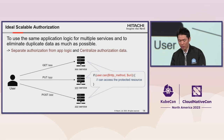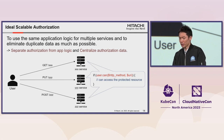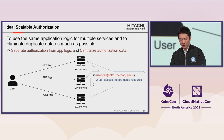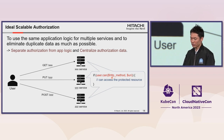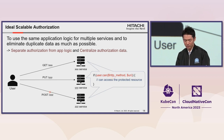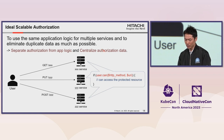To summarize what scalable authorization means: use the same application logic for multiple services and eliminate duplicate data as much as possible. In this example, all services use the same authorization logic, which uses URIs specifying resources and HTTP methods specifying what you do with those resources. To realize this, you need two things: to separate authorization from application logic, and to centralize authorization data.